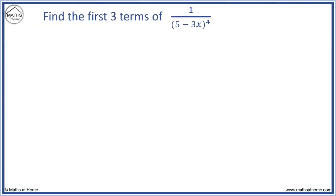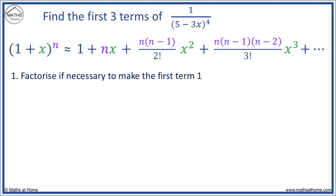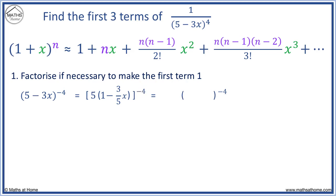In this next example, we will find the first three terms of 1 over (5 minus 3x) to the power of 4. Step 1: we first write our fraction as a power. Because (5 minus 3x) is on the denominator, we can write this as (5 minus 3x) to the power of minus 4. We need to factorise the 5 out to make the first term equal 1. Dividing the bracket by 5, we get 1 minus 3 over 5 x. We can keep (1 minus 3/5 x) as the first term is 1.